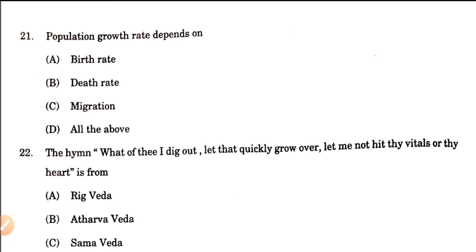Question number 21: Population growth rate depends on birth rate, death rate, migration, or all of the above? The population growth rate depends on all three. Birth rate — if it is high, population grows; if low, it decreases. Death rate — if high, population decreases. Migration includes emigration and immigration, which also affect the growth rate. So all of these is the correct answer.